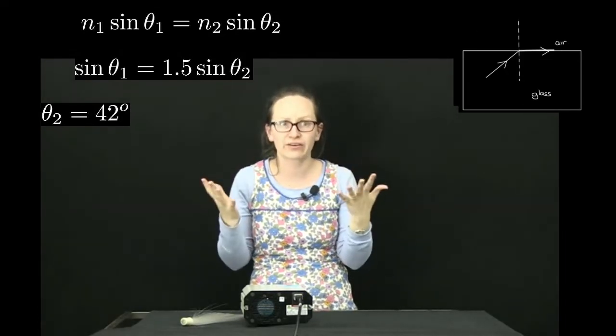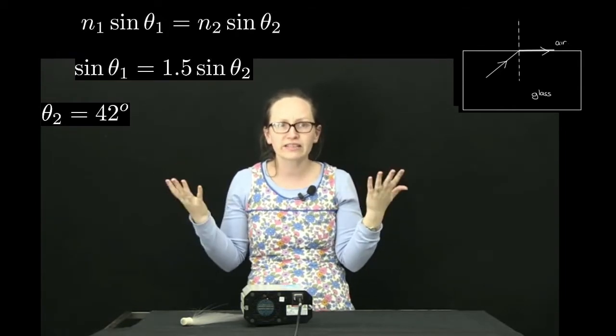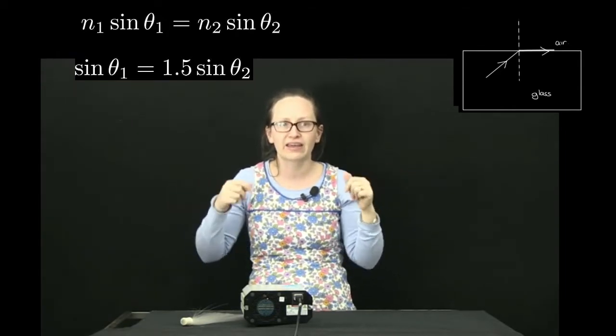So this angle is called the critical angle. All different mediums have different critical angles. The critical angle is given by 1 equals n sin θ times the critical angle.